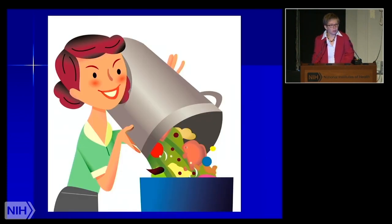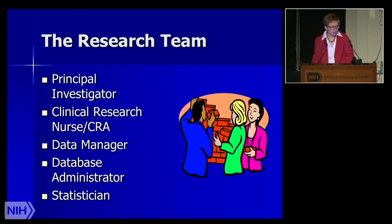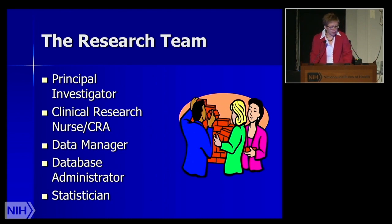There's this old adage — garbage in, garbage out. If you don't have good case report forms, you're not going to get the data and information that you need. The research team plays a really vital role in this process. They can be made up of such levels as the principal investigator, clinical research nurse or CRA, the data manager, database administrator, and statistician. All these people play a key role.